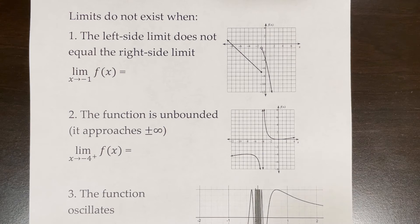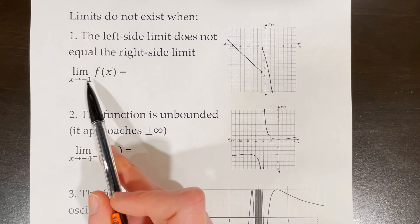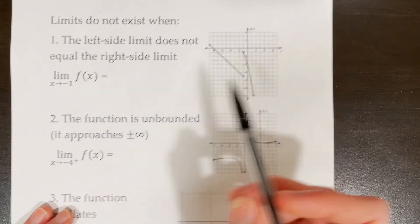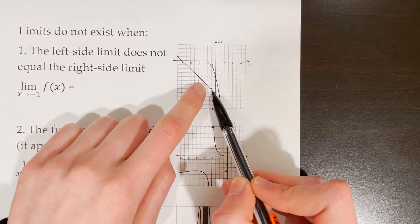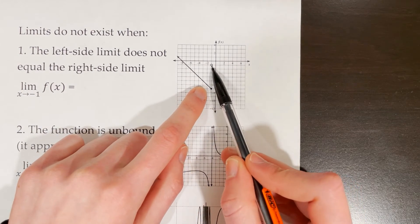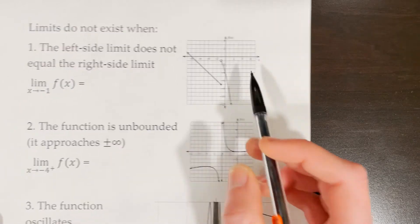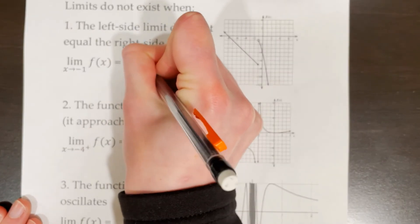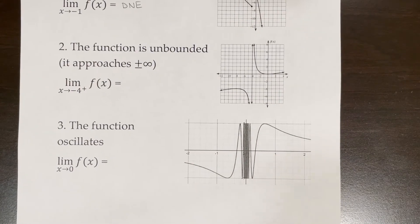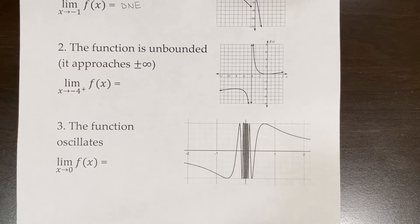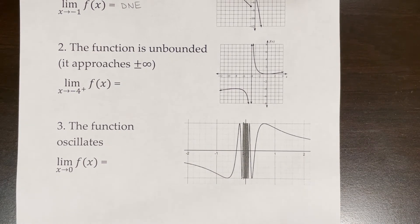There are three specific situations in which limits do not exist. The first is when the left-side limit does not equal the right-side limit — as we just saw, approaching negative 1 gives negative 7 from the left and negative 1 from the right, so the overall limit does not exist. The second situation is when the function is unbounded, meaning it's approaching positive or negative infinity. Since infinity is not a definable number, we can't determine the limit, so it does not exist.